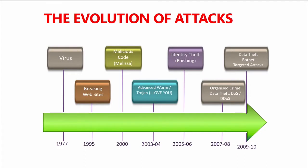From there the landscape evolved to website attacks. IIS 4 was one of the most hacked websites. In early 2000, Melissa came out, then new variants — the advanced worm Trojans called I Love You, Nimda, and Code Red. These were interesting times in the history of cyber threats.